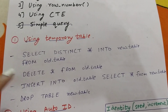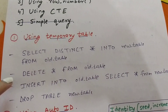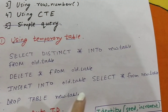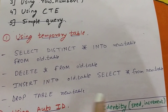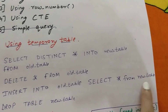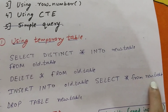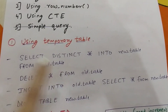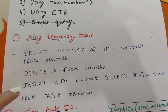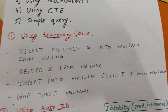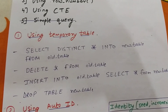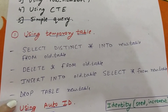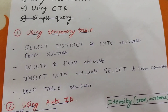The third step is INSERT INTO old_table SELECT * FROM new_table. We select all items from the new table — which contains all distinct items — and insert them into our old table, which is empty at this point. So our old table will now have all the distinct items. The fourth step is DROP TABLE new_table. This is how, by using a temporary table, we can remove all duplicate items.